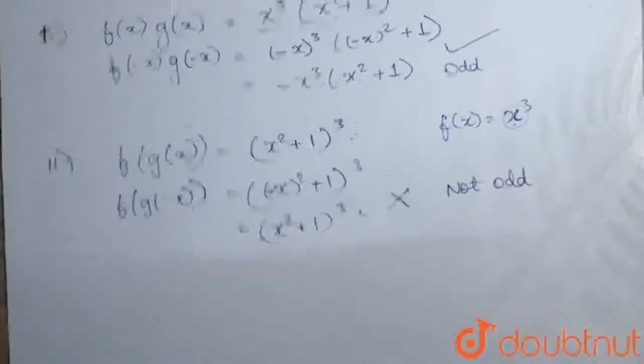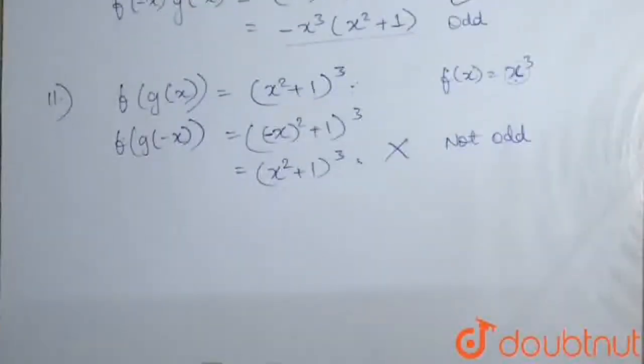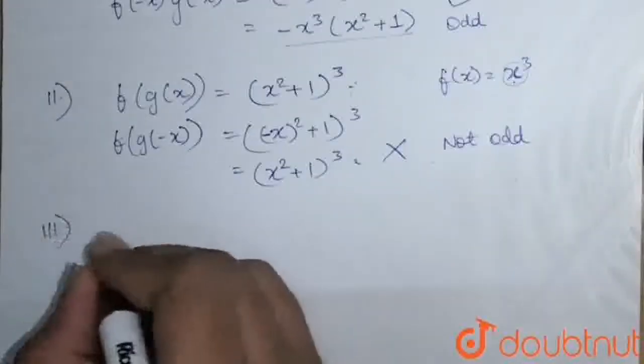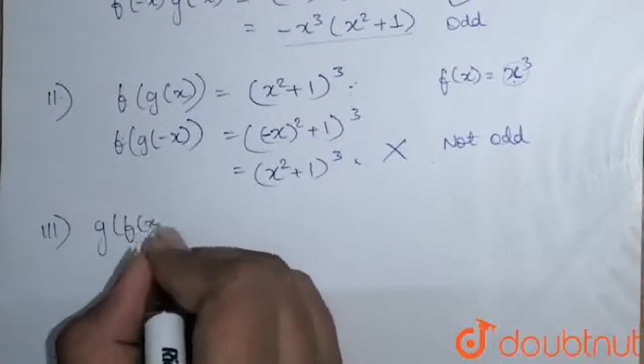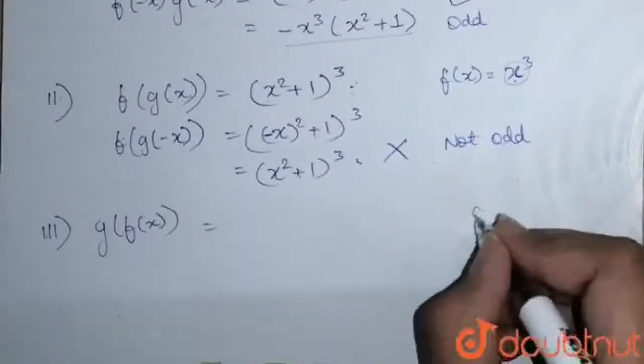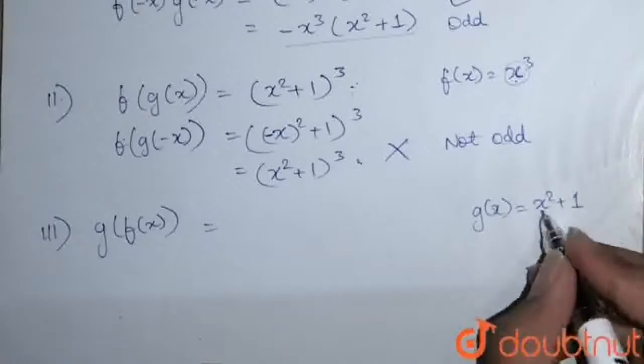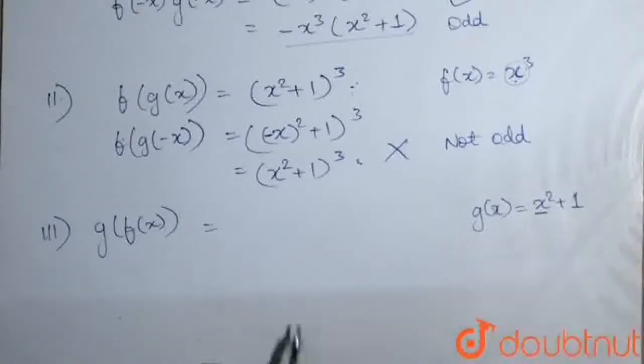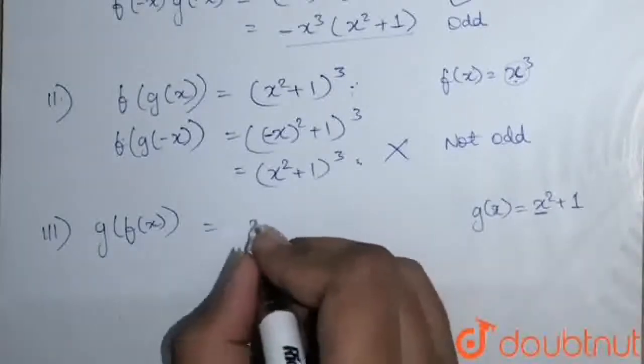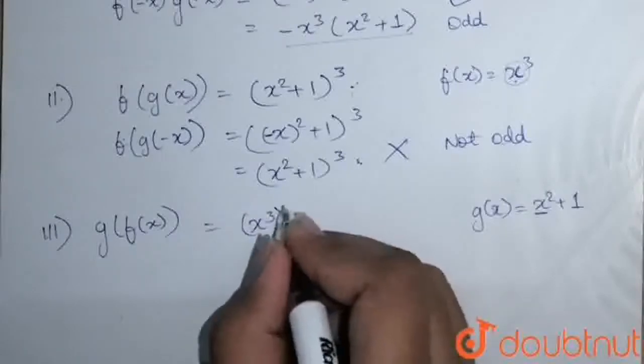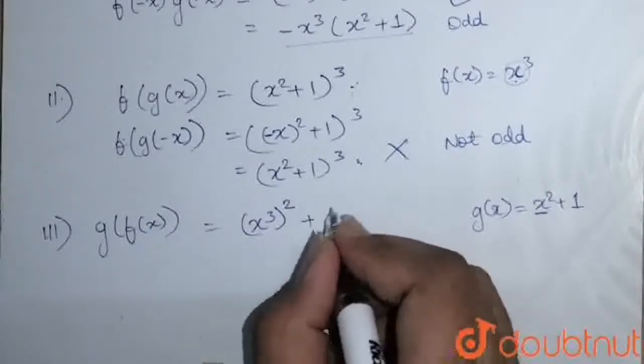Now, looking to the third function. Third function is g(f(x)). So our g(x) was x² + 1. We have to put f(x) in place of this x. And f(x) was x³. So (x³)² + 1.